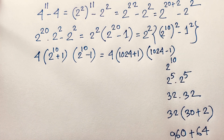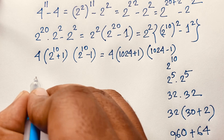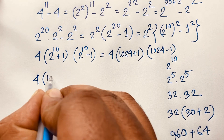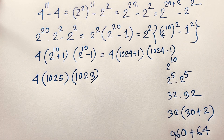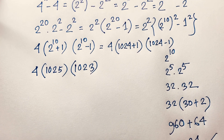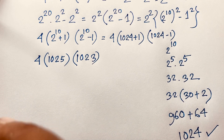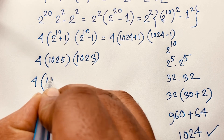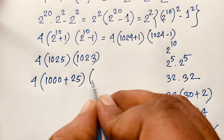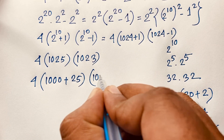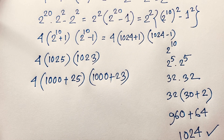So the expression becomes 4 times (1024 plus 1) times (1024 minus 1), which is 4 times 1025 times 1023. Now how do we evaluate this multiplication without a calculator? I write 1025 as 1000 plus 25, and 1023 as 1000 plus 23.